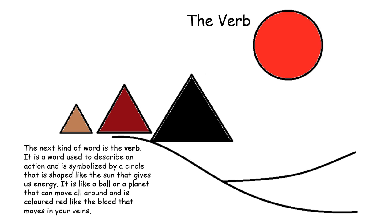The next kind of word is the verb. It is a word used to describe an action and is symbolized by a circle that is shaped like the sun that gives us energy. It is like a ball or a planet that can move all around and is colored red like the blood that moves in your veins.